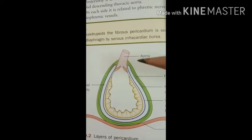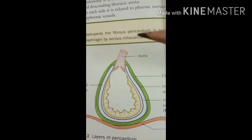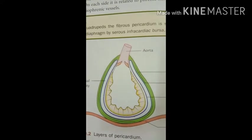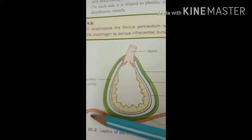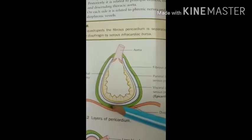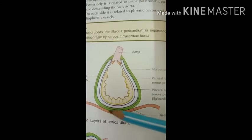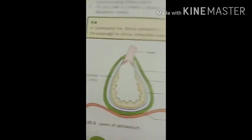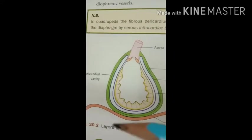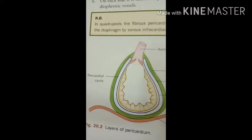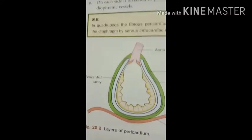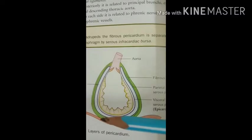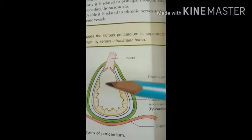The sternal angle is the attachment point of the body and the manubrium sterni. The base of the pericardium is broad and inseparably blended to the central tendon of the diaphragm — you can see the dome-shaped diaphragm with the central tendon centrally. Anteriorly, the pericardium is attached to the upper and lower ends of the body of the sternum by the superior and inferior sternopericardial ligaments.